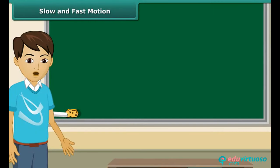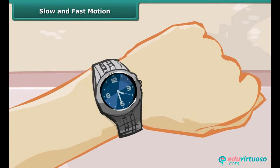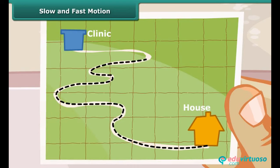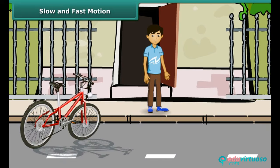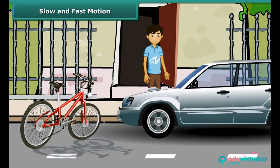Suppose you have an appointment with your doctor at 5 in the evening. It is already 4:30 PM and the doctor's clinic is 5 km away from your house. You have the choice of either cycling down or taking a taxi to the clinic.